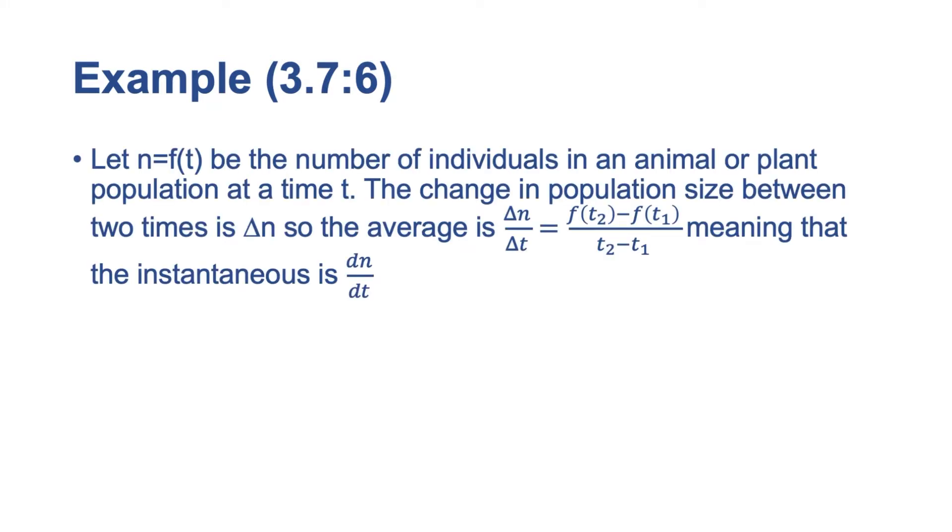So our example says, let n be a function of time. So n equals f of t. Be the number of individuals in an animal or plant at a population at a time t. The change in population size between two times is delta n. So the average is delta n over delta t equals f of t2 minus f of t1 over t2 minus t1. And of course, this is that general secant line approximation for average rate of change that we've been seeing throughout high school and probably in a little bit of middle school. And of course, we've covered this previously.